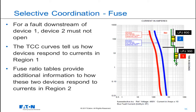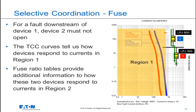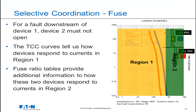The time-current characteristic curves tell us how devices respond to currents in region 1. The FUSE Ratio Tables provide additional information on how these two devices respond to currents beyond and into region 2.